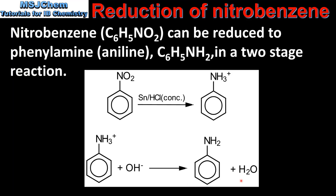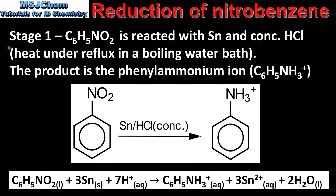Next we look at each stage in more detail. In stage 1, nitrobenzene is reacted with tin and concentrated hydrochloric acid. The conditions are heat under reflux in a boiling water bath. The product of stage 1 is the phenylammonium ion. The equation shows that nitrobenzene reacts with tin and hydrogen ions to form the phenylammonium ion, tin ions, and water.